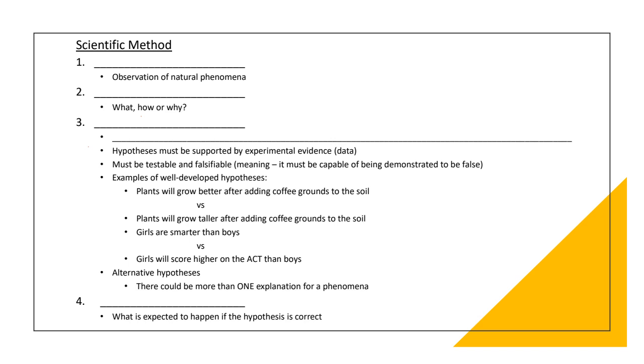All right, so let's go through the scientific method. The first thing is we have an observation, an observation of natural phenomena. What happens? You observe something, and then you start questioning.